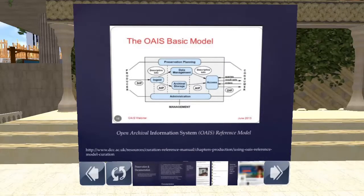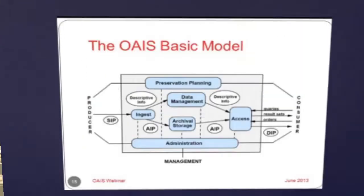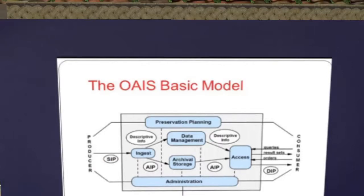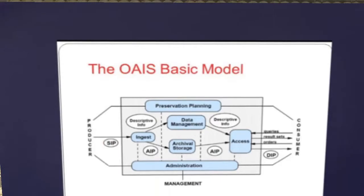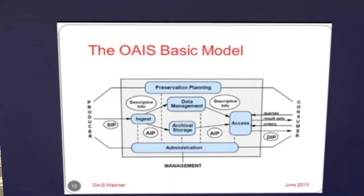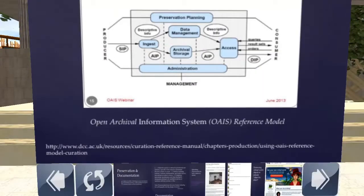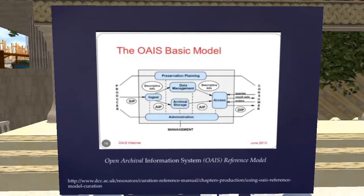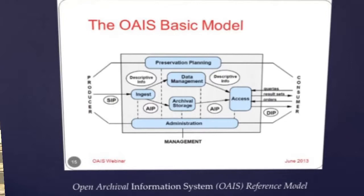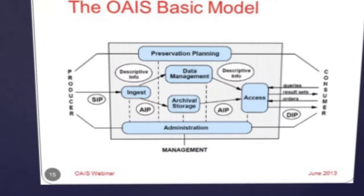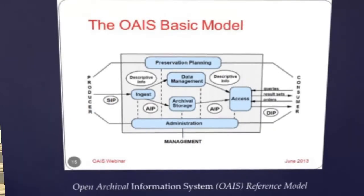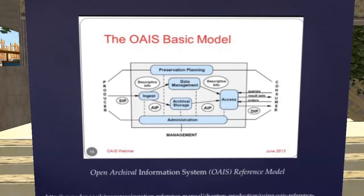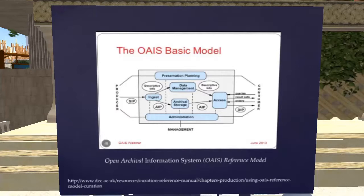There is a preservation model used when thinking about preserving digital objects. The concept is that you want to package this object as a Submission Information Package — an SIP. You put your digital object with all the metadata you know about it when you first preserve it into a repository for management, preservation, and access. We've got the SIP going into the repository — that's what ingest means. We're probably adding more metadata to it because now it's inside a repository.